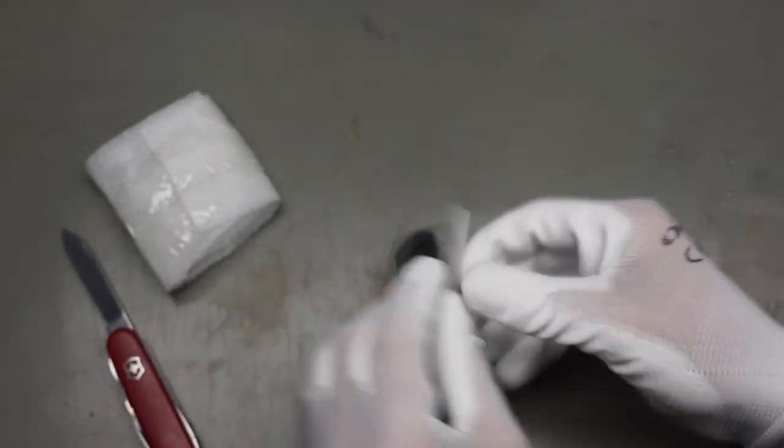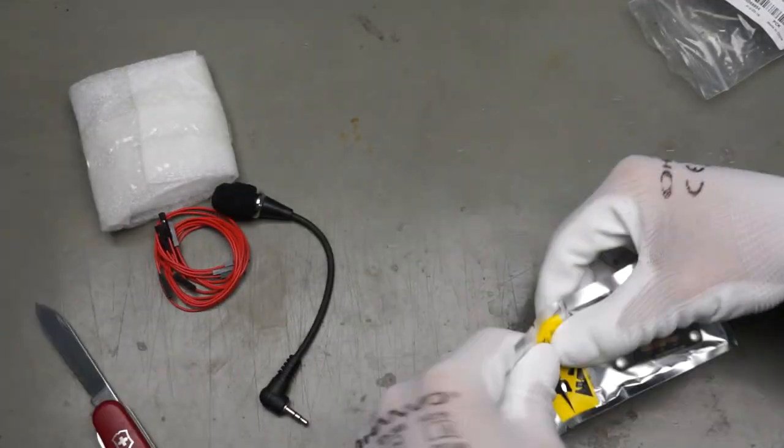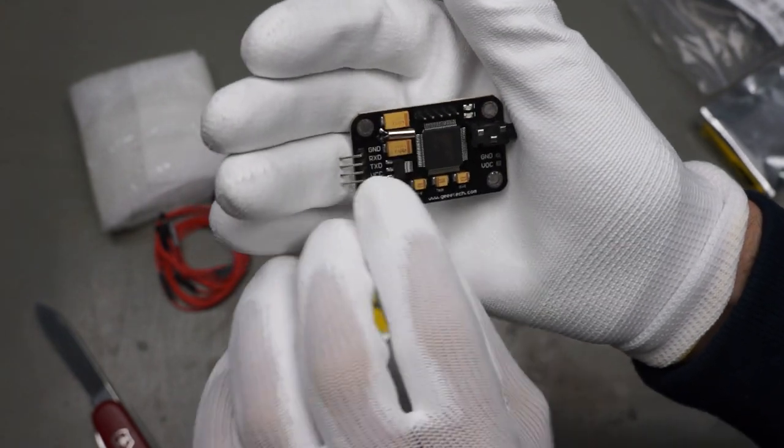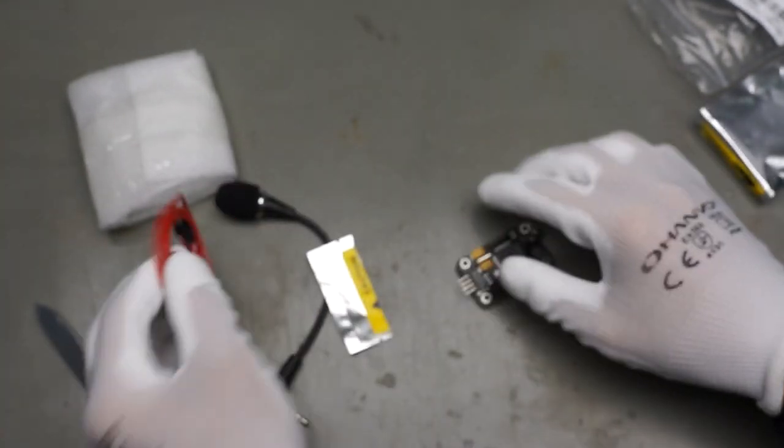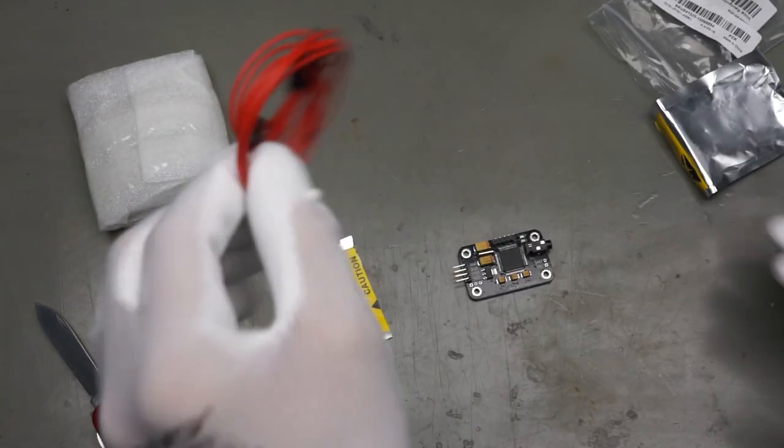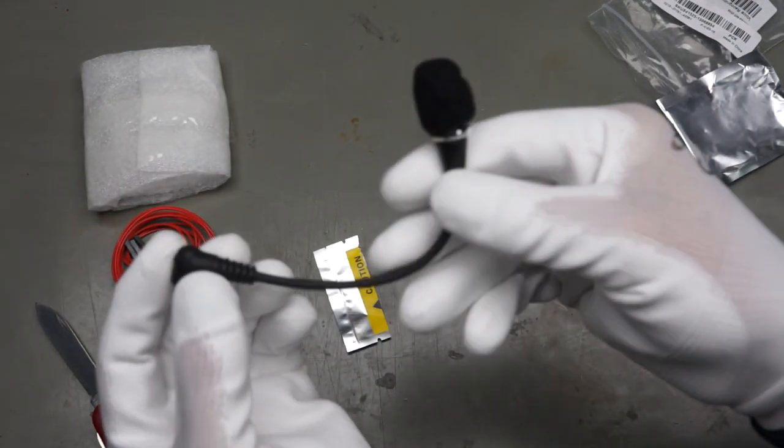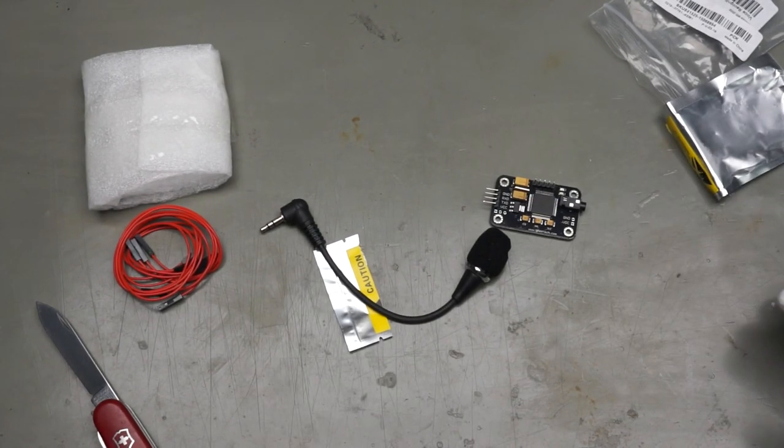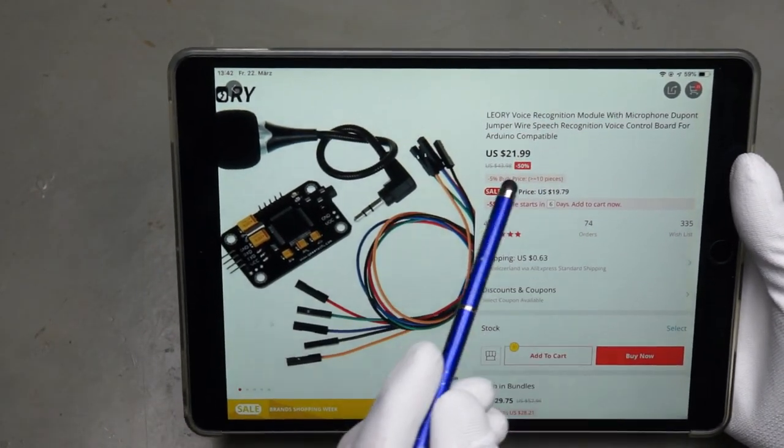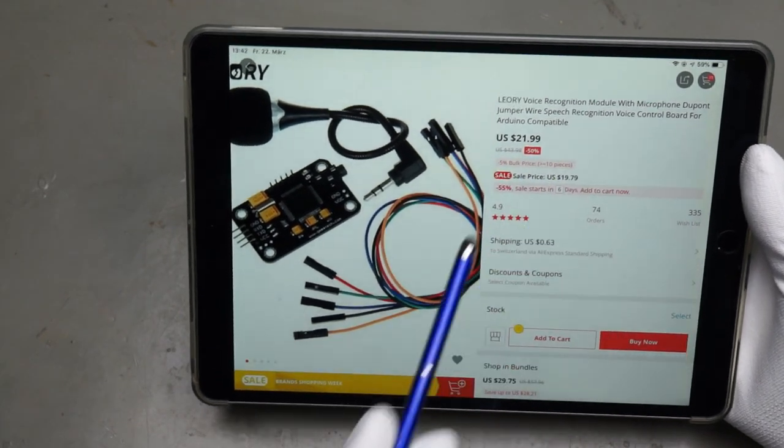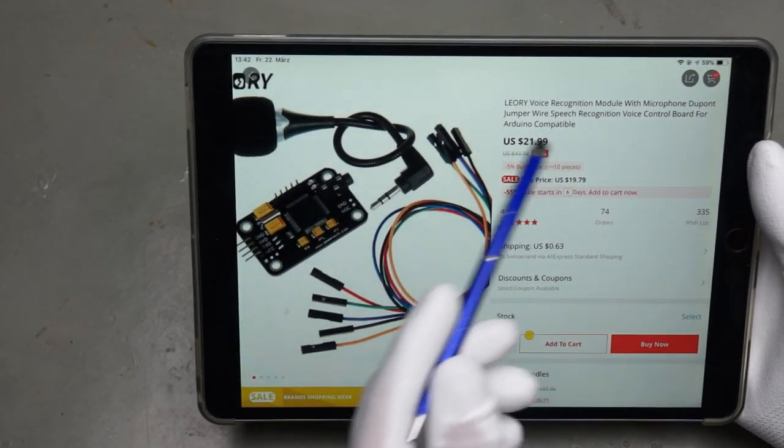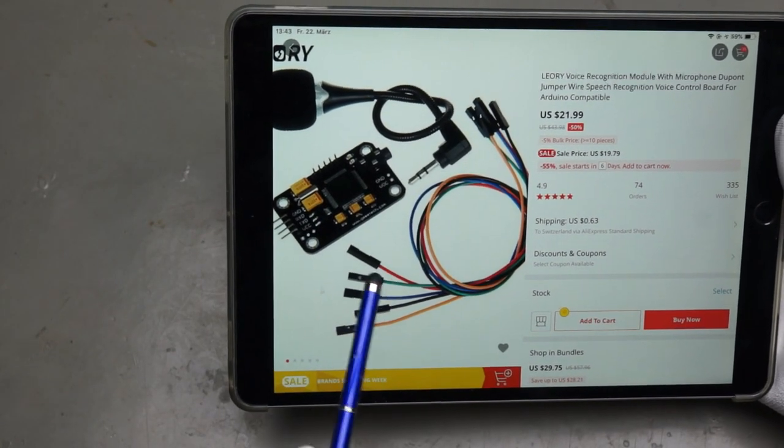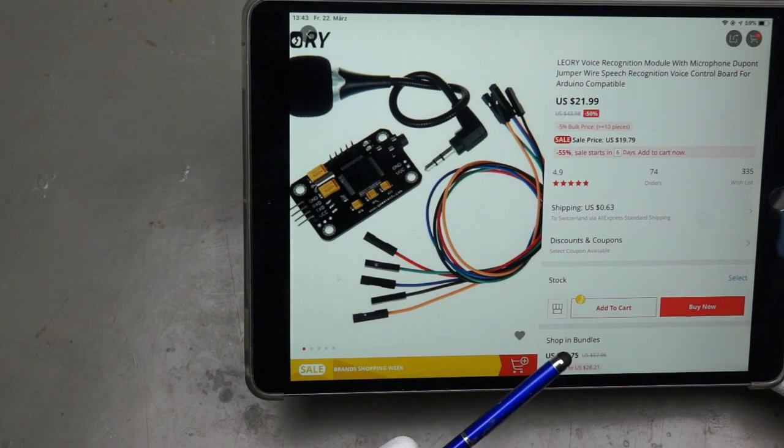Voice recognition module. Quite a big chip and huge capacitors here and a few two-point wires. But the most important probably is the microphone. In the meantime, I found the listing. The price is $22, so it's not a cheap product, but obviously it's not quite easy to do voice recognition.